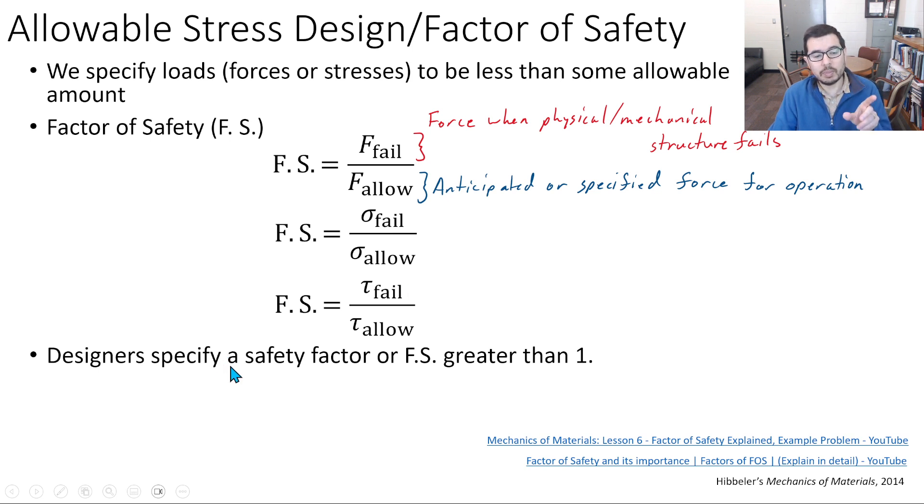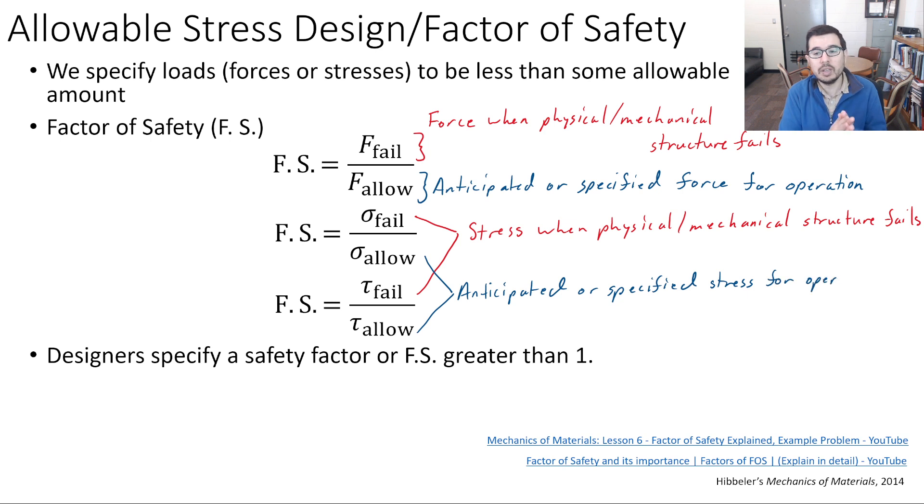Typically we want a safety factor greater than one. You don't want safety factors less than one because essentially you're saying that your allowable stress is going to be greater than your stress of failure or what the mechanical system can hold, and it's going to fail pretty much every time. The numerators are the loads or the stresses when physical or mechanical structure will actually fail, and in the denominator we have the anticipated or specified stress for operation. Another way to think of this is what is the stress associated with failure divided by what is the stress when you're operating this, or what it will experience with the wind hitting a structure. They should be less than what the structure will actually fail experiencing.